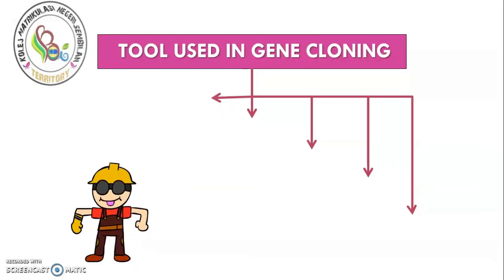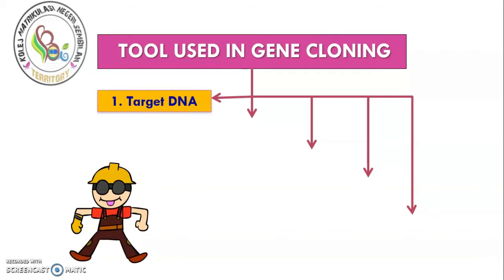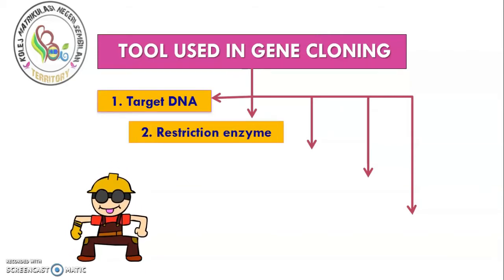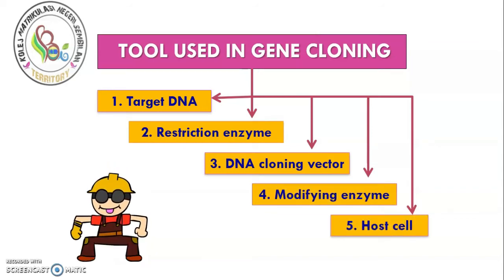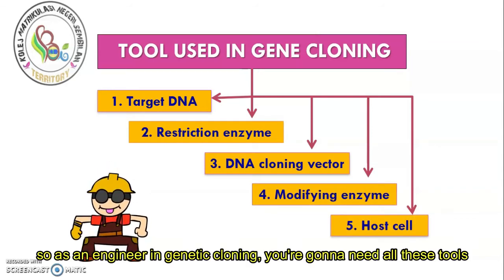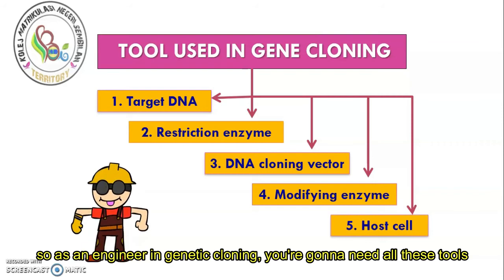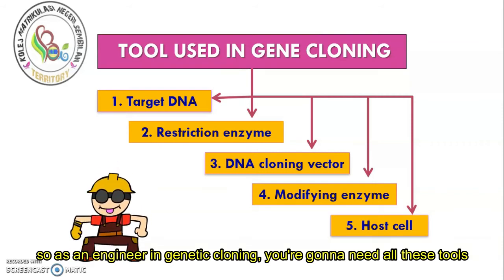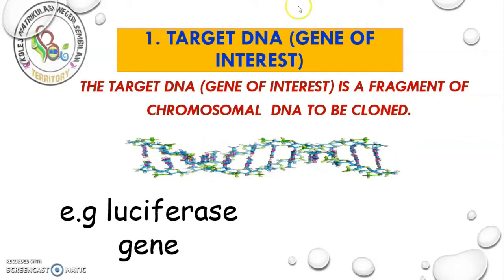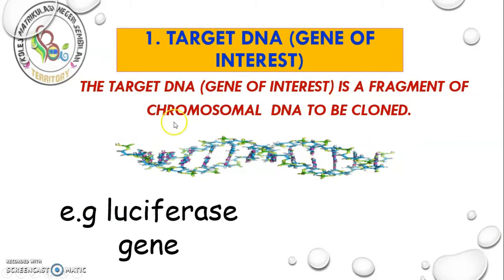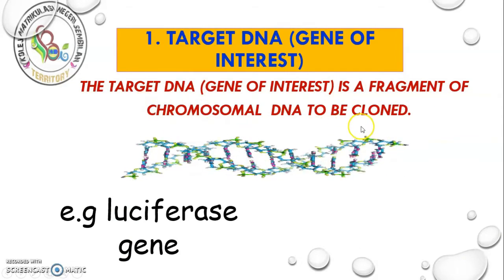So the tools used in gene cloning are: target DNA, restriction enzyme, DNA cloning vector, modifying enzyme, and host cell. As an engineer in genetic cloning, you're going to need all these tools. Target DNA, or gene of interest, is the fragment of chromosomal DNA to be cloned.